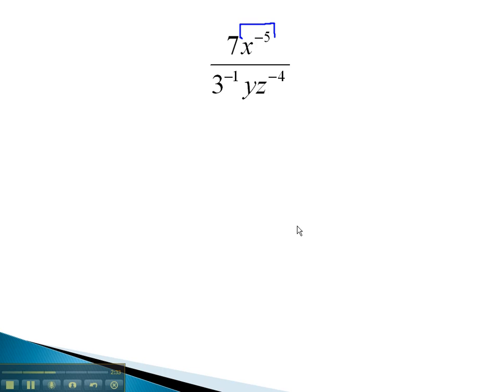This means the 7 does not have a negative exponent, just the x. Similarly, the 3 to the negative 1 and z to the negative 4th have negative exponents.